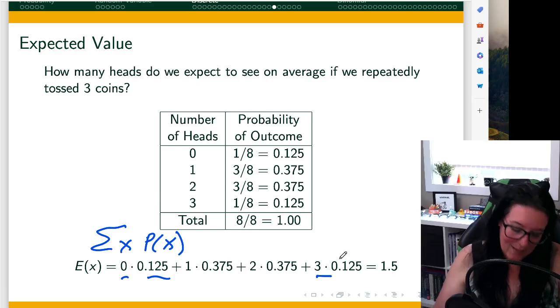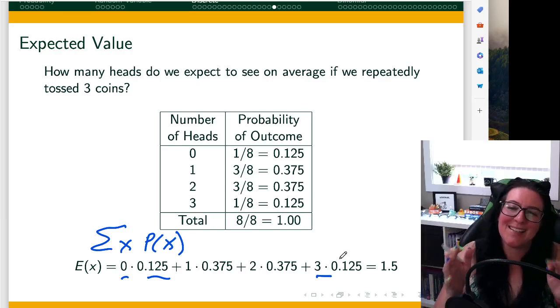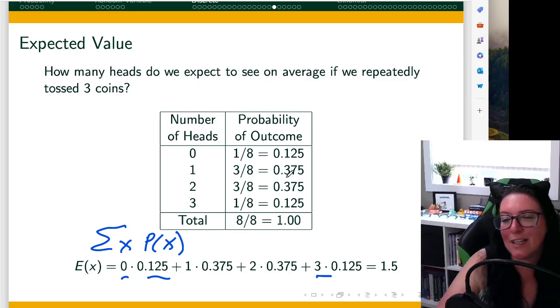And yes, you can't get one and a half, but that's telling you some of the time you're getting one head, sometimes you're getting two, and that's going to be very similar in terms of those outcomes. They have equal probability here.